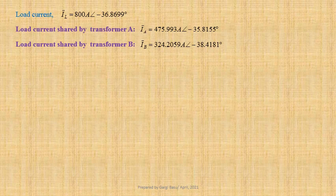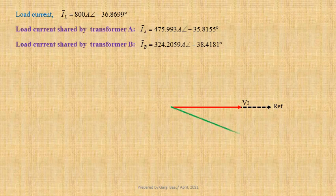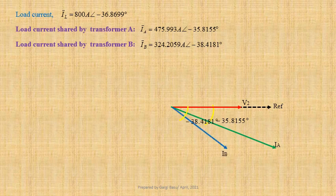Let us now draw the phasor diagram taking load terminal voltage V2 as reference. IA lags V2 by an angle 35.8155 degree. IB lags V2 by an angle 38.4181 degree. Here we observe that IA and IB have different phases.